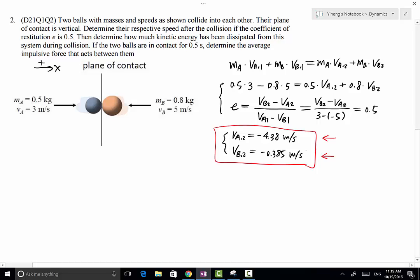We can continue to solve for how much kinetic energy has been lost during this collision. This can be determined by the total initial kinetic energy minus the total final kinetic energy, which equals ½MA·VA1² + ½MB·VB1² minus (½MA·VA2² + ½MB·VB2²).